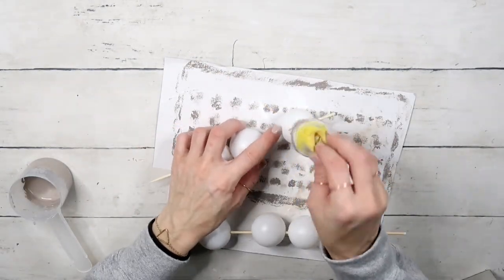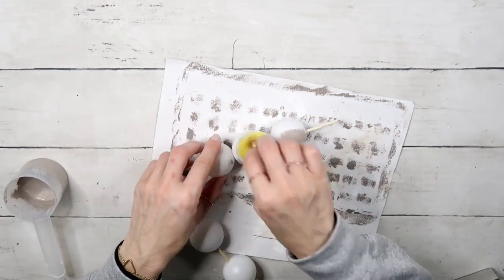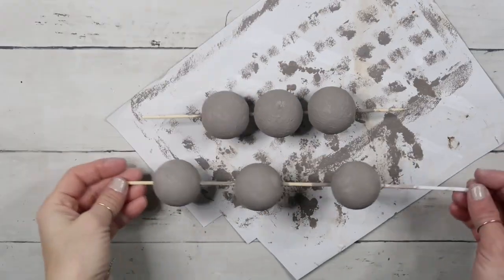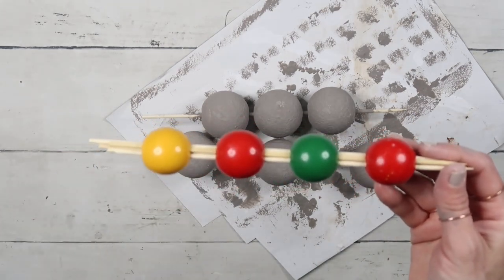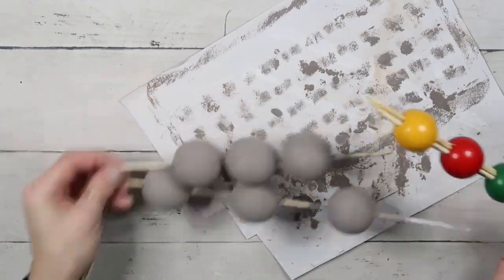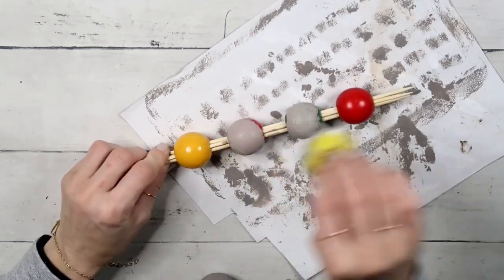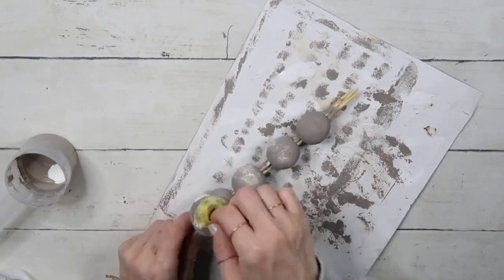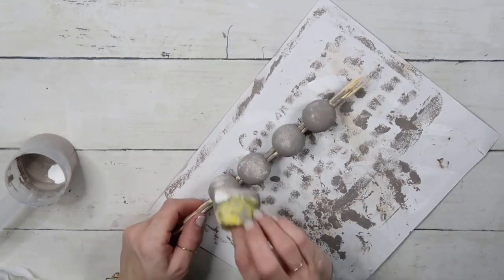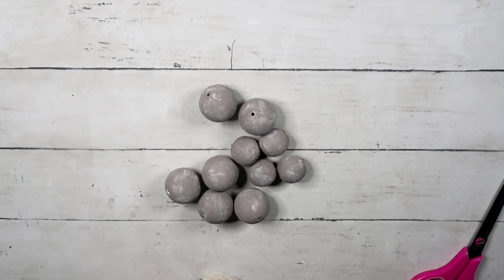I am putting them on a skewer and I will create a mixture of this gray chalk paint by Martha Stewart and baking soda and just dab it all around with a sponge. I did two coats because I really wanted that texture to show through. You have to be very careful working with ping pong balls because they're very delicate and you don't want to smash them. I'm doing the same thing with these wooden balls as well.